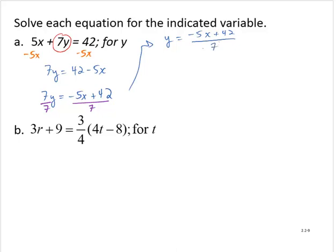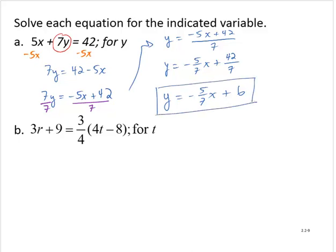More commonly, we would write this as y equals negative 5 over 7. So a negative 5 sevenths x. And then we would have a 42 over 7, applying basically a distributive property. 42 over 7 is 6. So y equals negative 5 sevenths x plus 6. That's how we would write this equation solved for y.